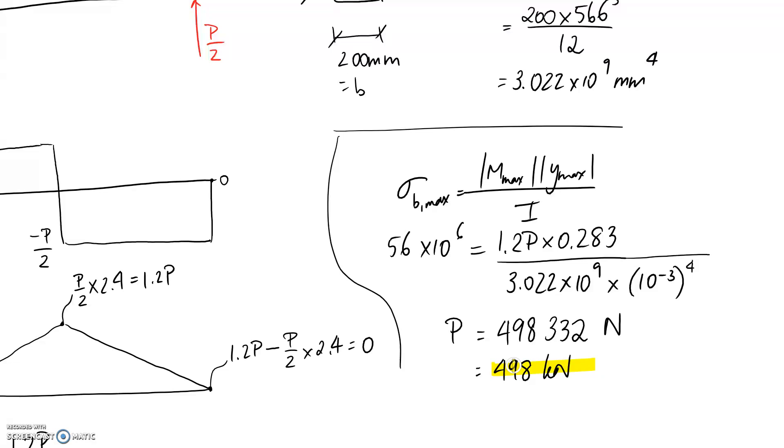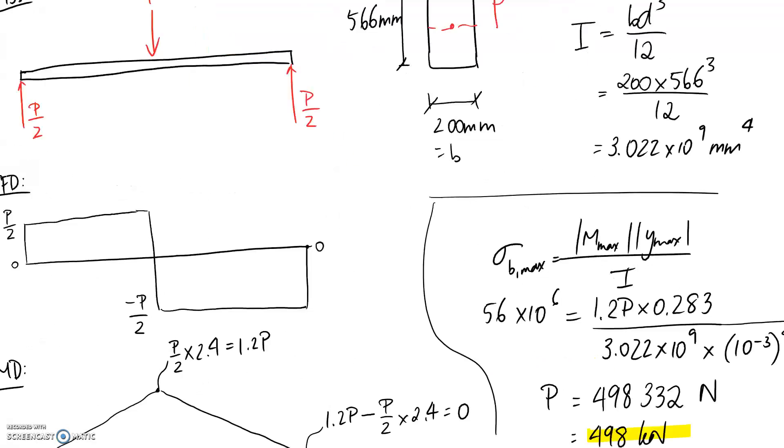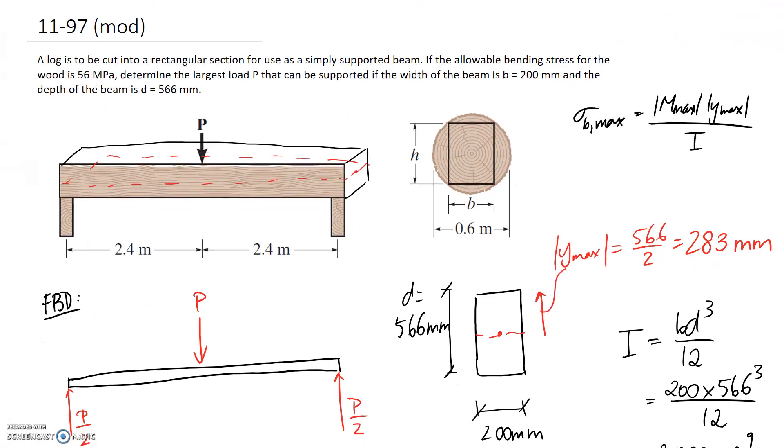So that's all there is to this question. We've determined that that force applied in the center is what you get for when you're designing for a 56 megapascal beam and you've got a fixed cross section as shown. So that's all there is, and see you in another video.